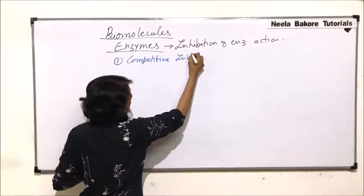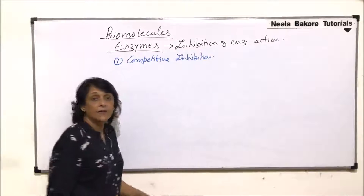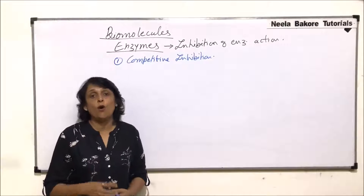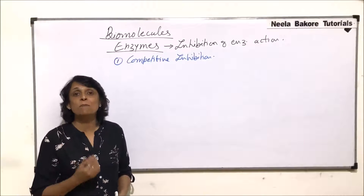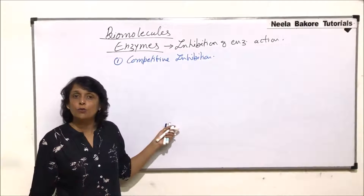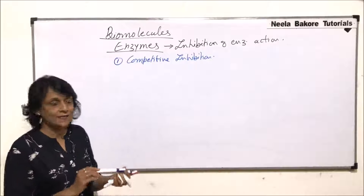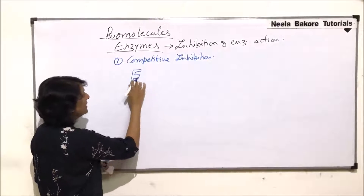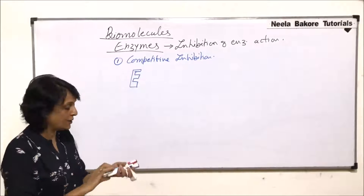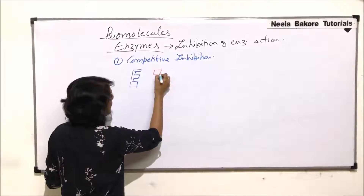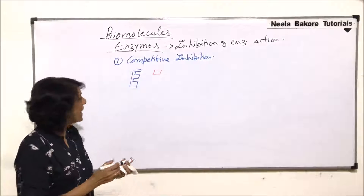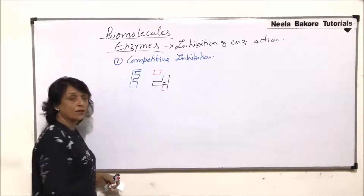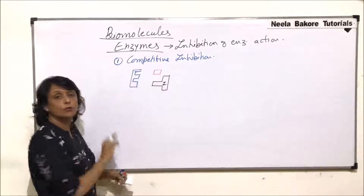The first one is known as competitive inhibition. Here there is a competition between the substrate molecule and the inhibitor — or we can say the inhibitor competes with the substrate molecule to bind with the active site. Let us draw this enzyme; these slots we are making are the active sites, and this is our substrate molecule which can fit or attach to this active site.